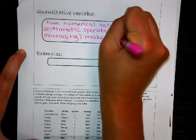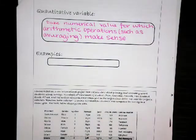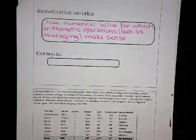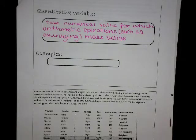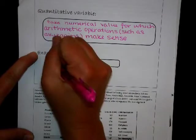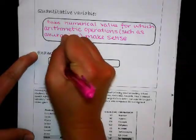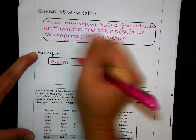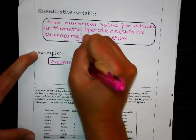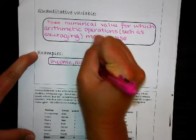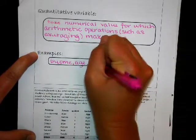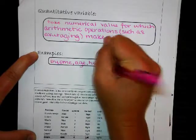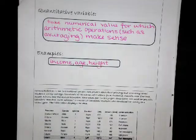An example: income, age, and like Avery said, height. Those are all things that we can describe by saying the average income of this company is blah blah blah, the average age of the AP statistics class is 17, I'm just guessing there.